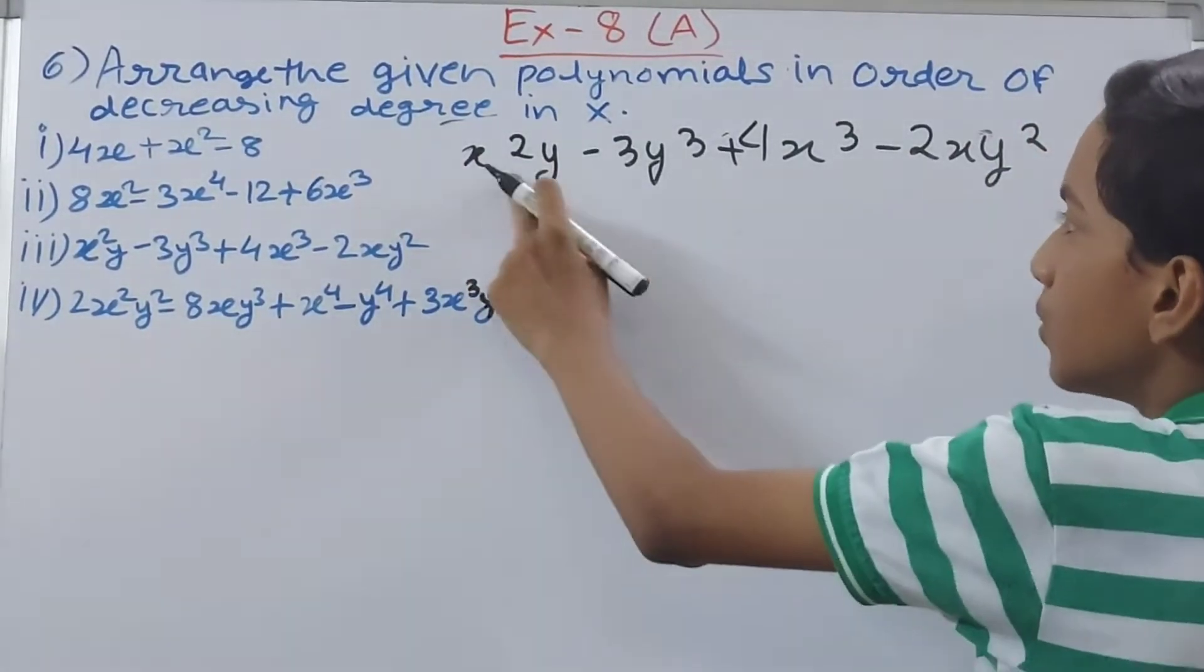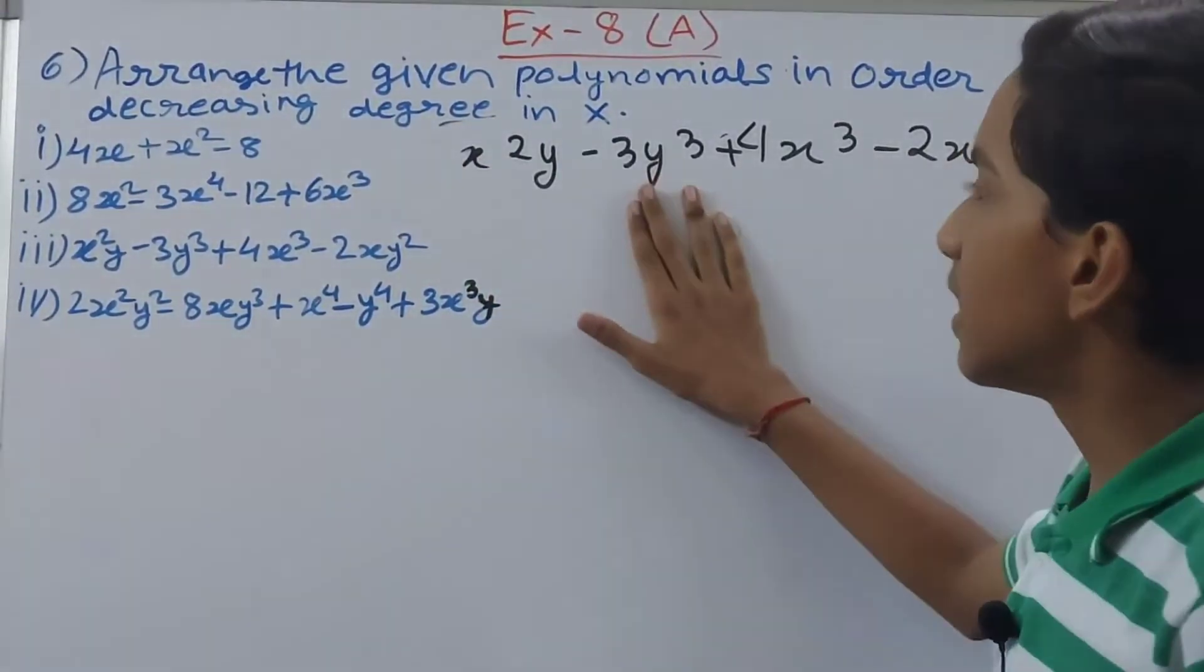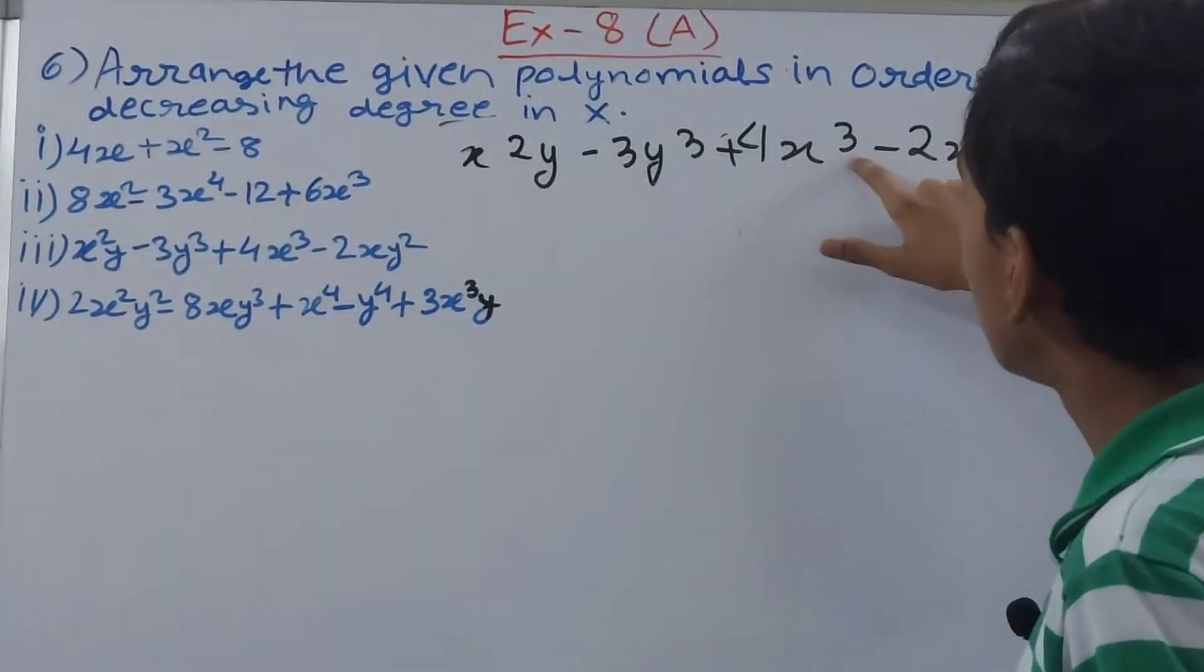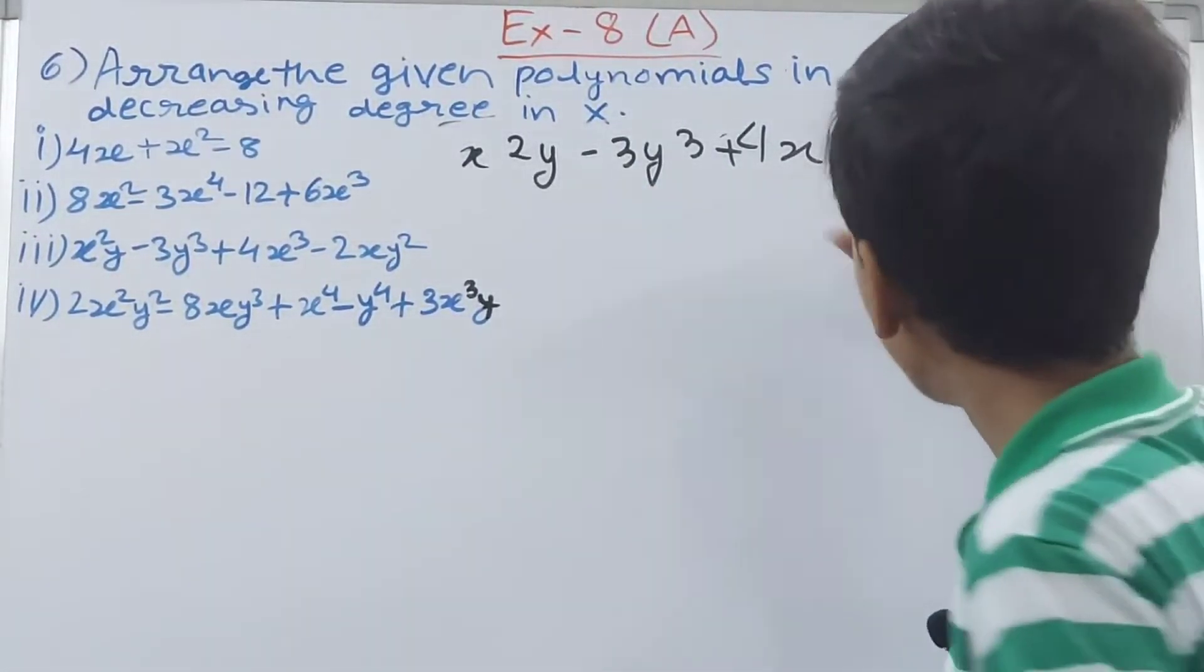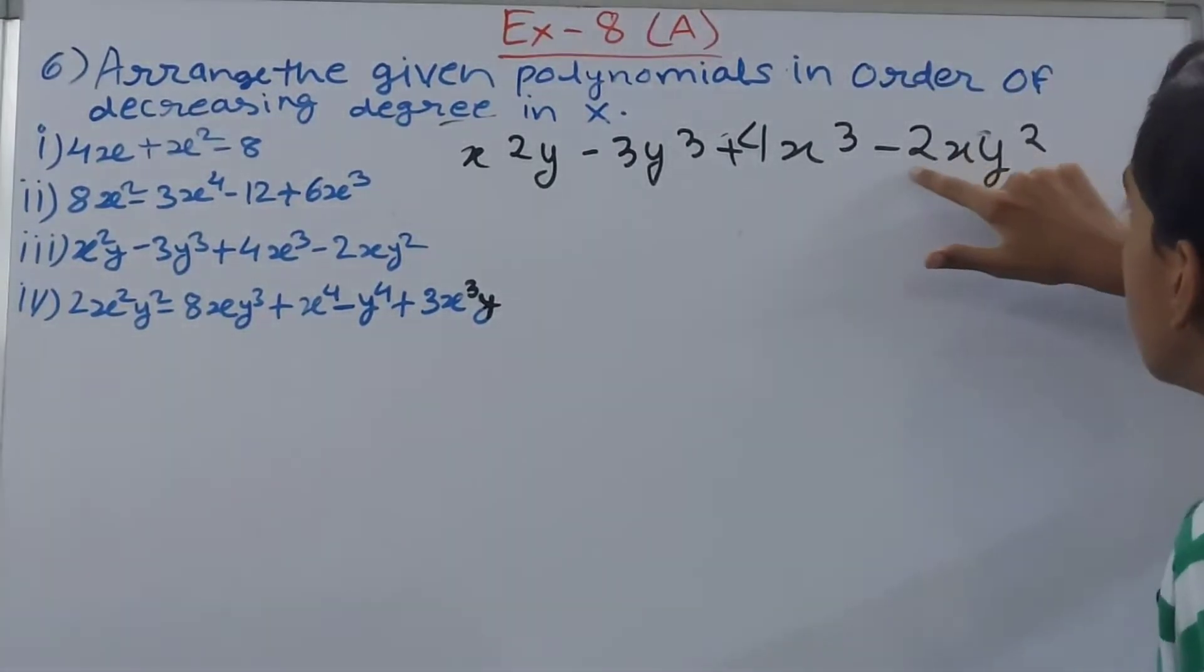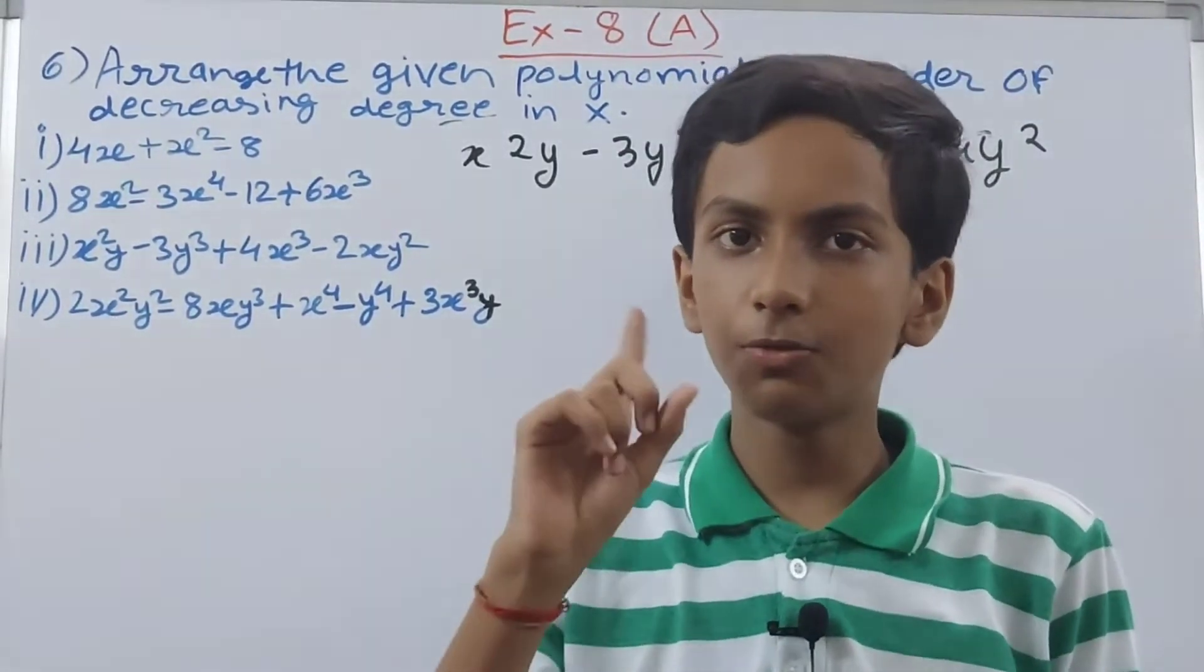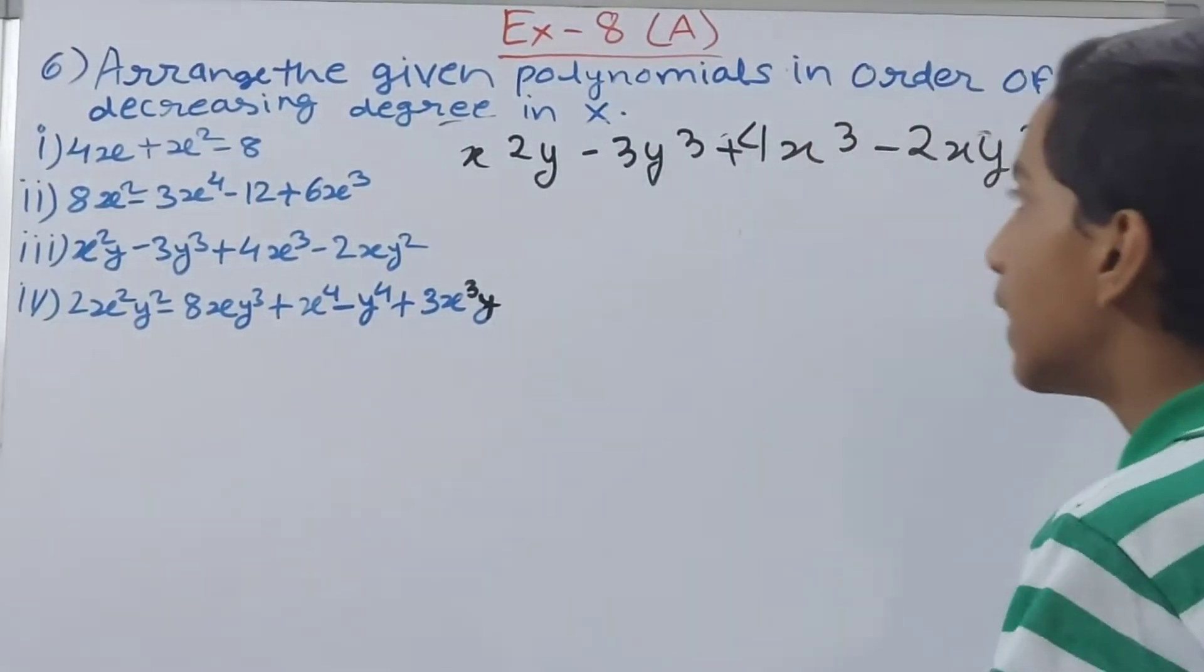So again here we have y, so just simply ignore y. First this one - here you can see x is having 2, so 2 is the degree. Here there is no x so you can take it as 0. Here 4x cube so again 3 is the degree. Here minus 2xy square, so x is here but no exponent is written, so that means degree becomes 1.